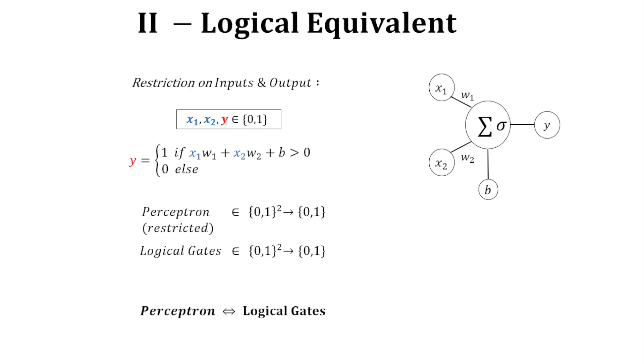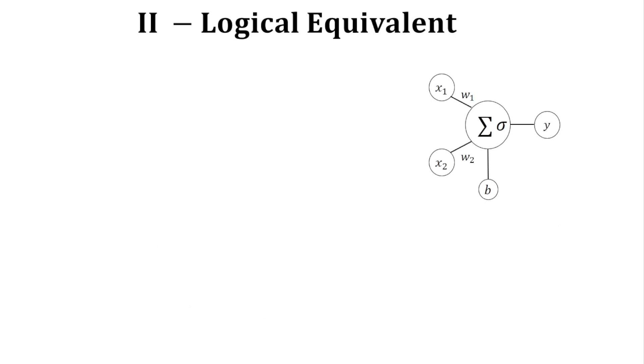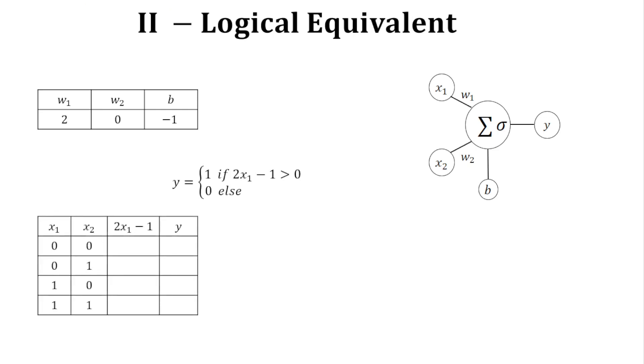So from now, truth tables will fit better to study the behavior of the perceptron as a logical gate. Let's see some examples just to get used to this new model of perceptron. So here, I have a perceptron with the following parameters. And here is the formula, the updated formula.